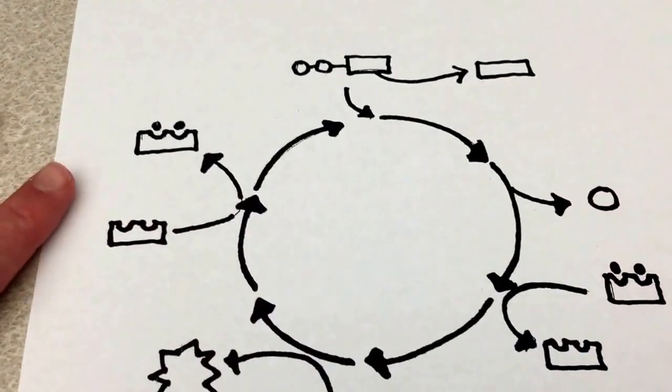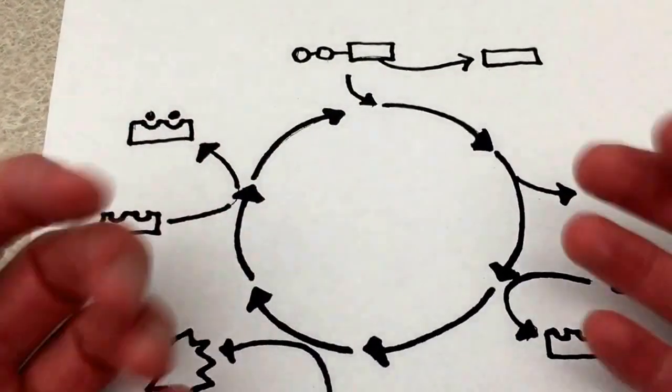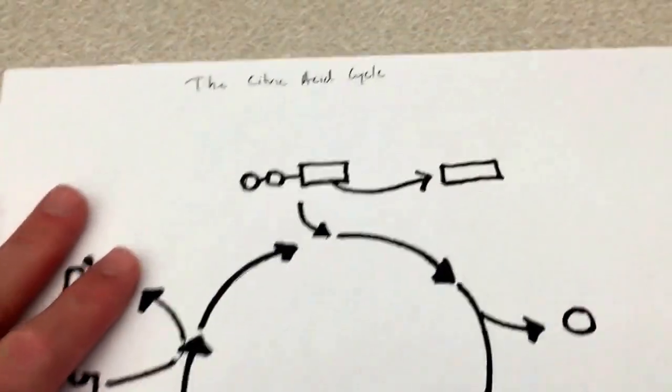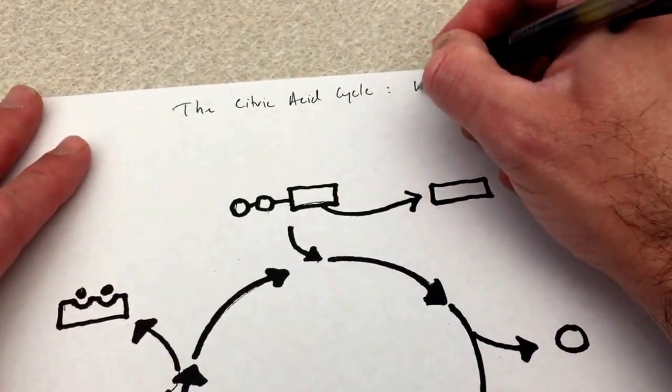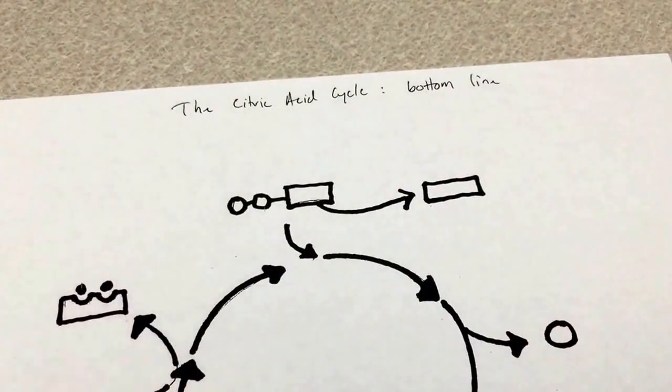Now that is where we get out our diagram which shows basically the bottom line of the citric acid cycle. This is not the detailed citric acid cycle, this is the citric acid cycle bottom line.